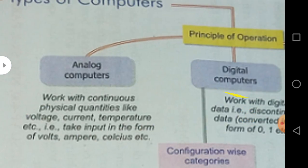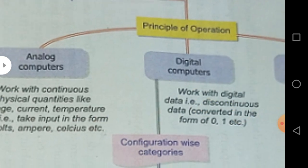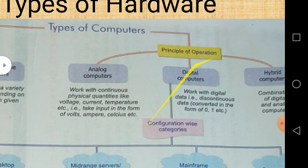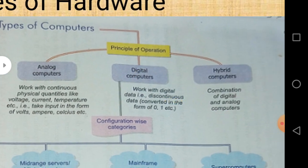On the basis of the principles of operation, computers can be divided into three different types: analog computer, digital computer, and hybrid computer. Analog computers work on continuous physical quantities such as voltage, current, and temperature. They take input in the form of volts, amperes, and celsius — not in the form of 0 and 1, but in the form of physical quantities.